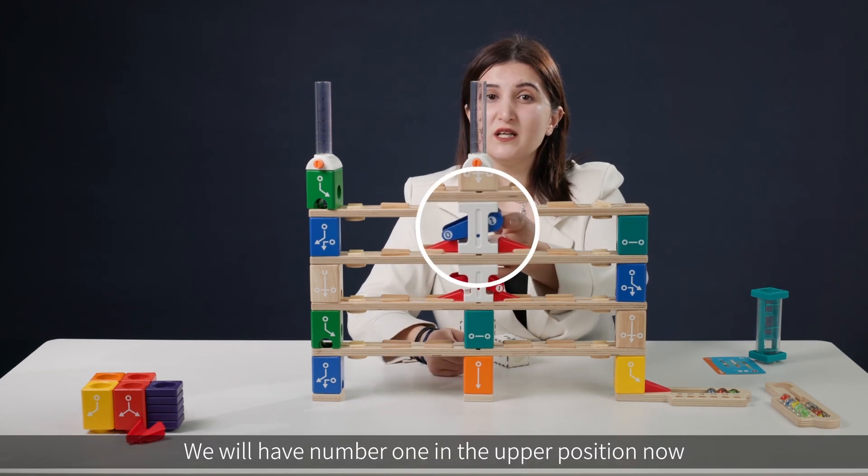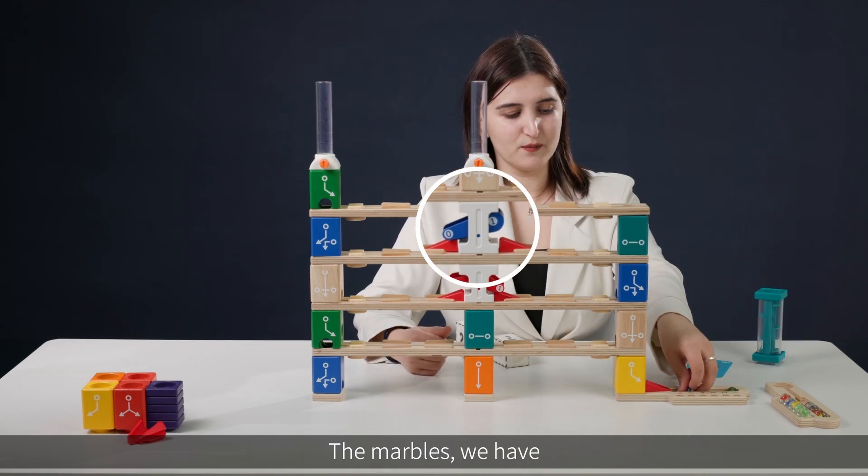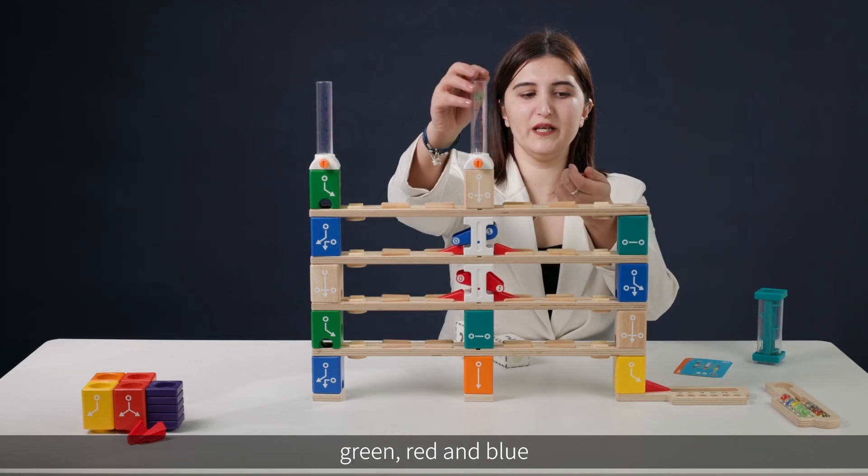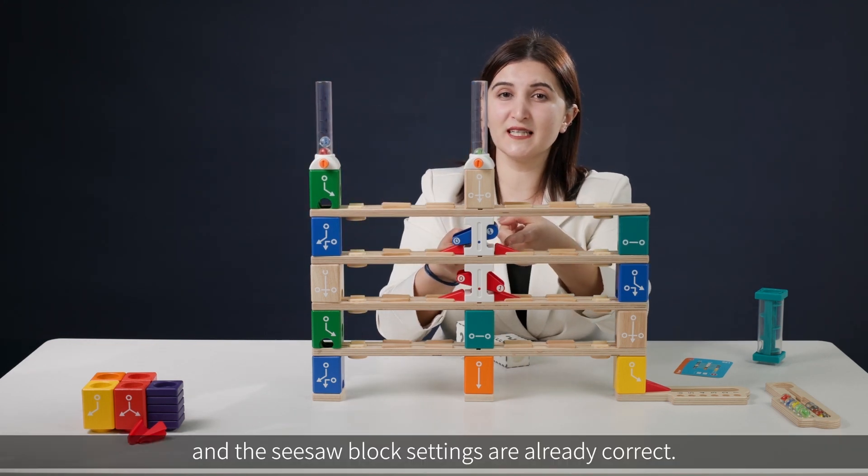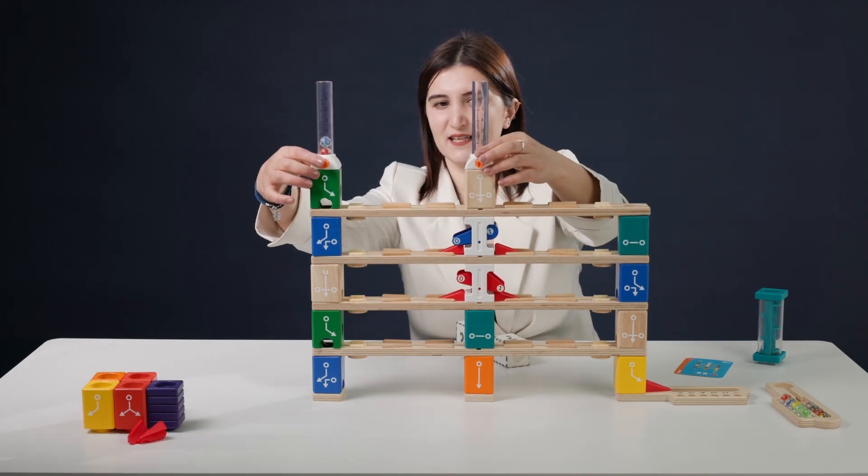We will have number one in the upper position now. The marbles, we have three, red and blue. And the seesaw block settings are already correct. Let's try.